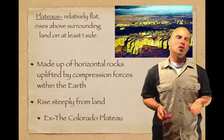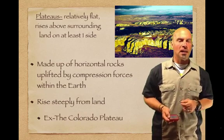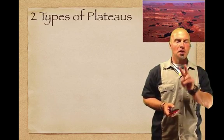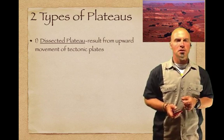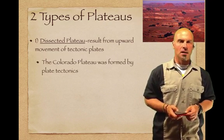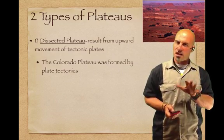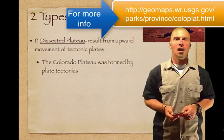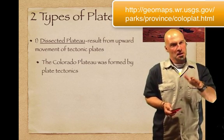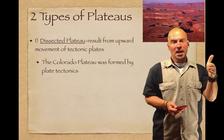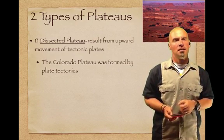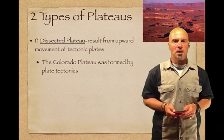So, plateaus are made up of horizontal rocks uplifted by compression forces within the Earth and rise steeply from the surrounding land. The two types of plateaus are the dissected plateau, which results from the upward movement of tectonic plates — the Colorado Plateau was likely formed this way, though some recent evidence questions this since the edge of our tectonic plate is closer to California. Still, it's our best current understanding. This covers most of the American Southwest and has been rising about 0.3 centimeters a year for the last 10 million years.